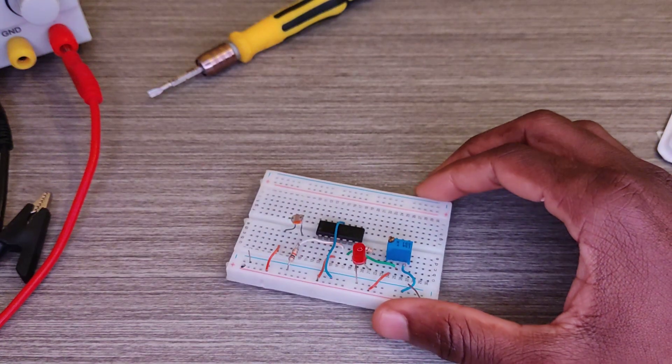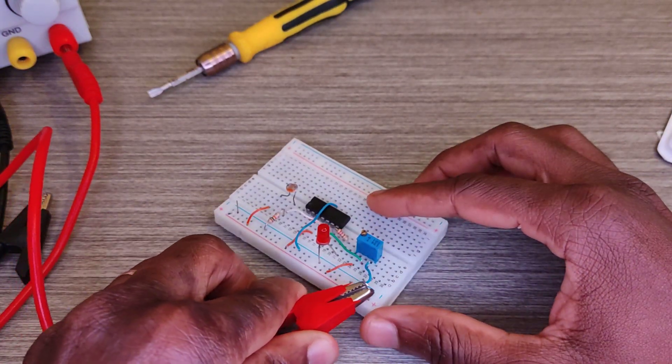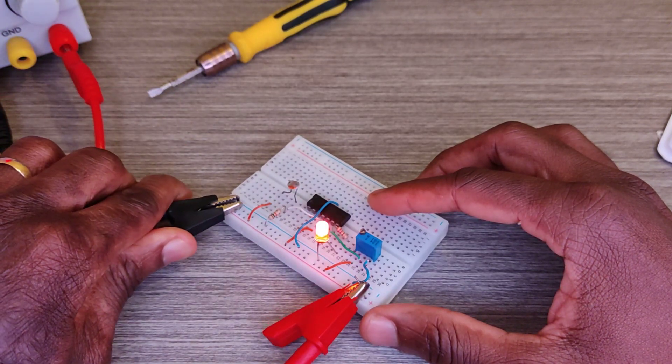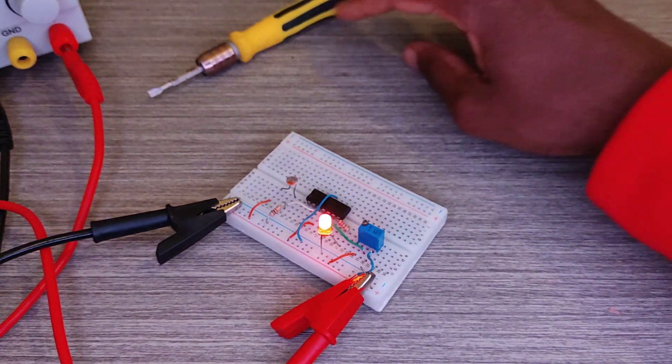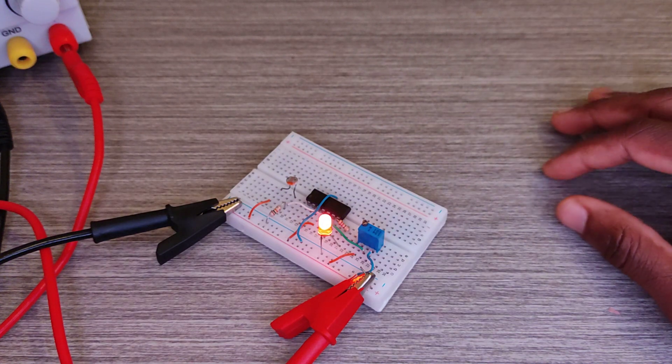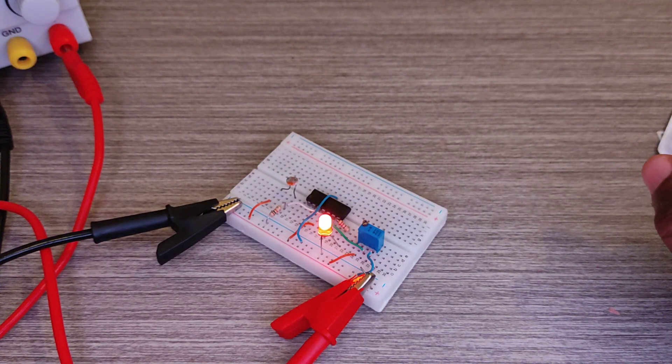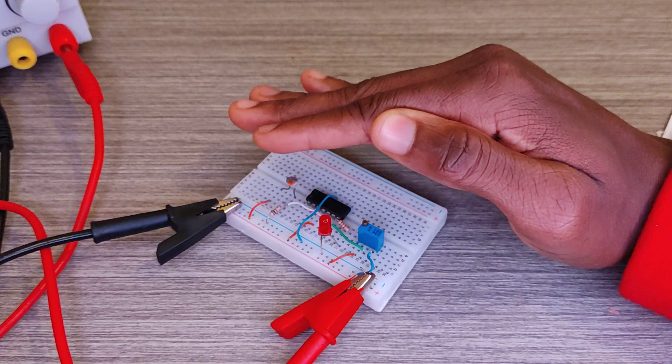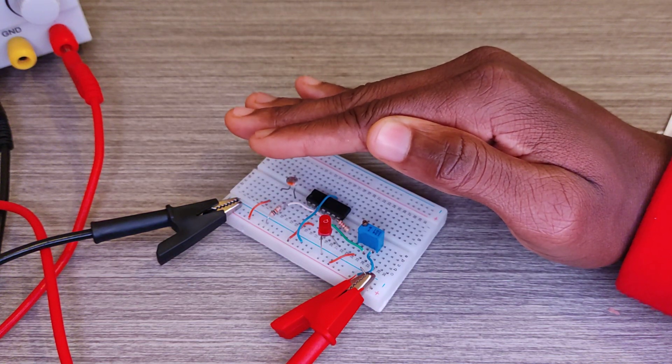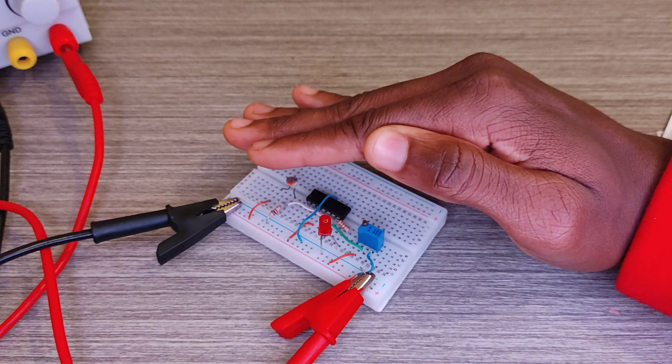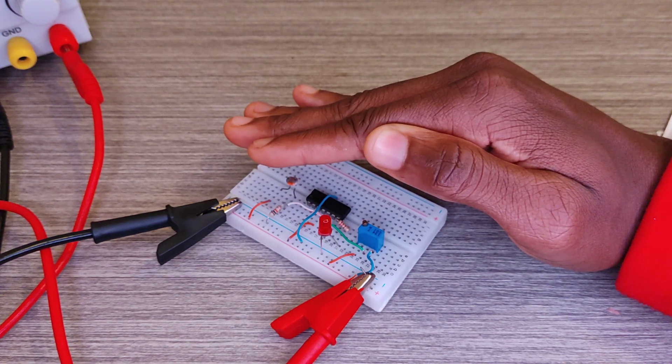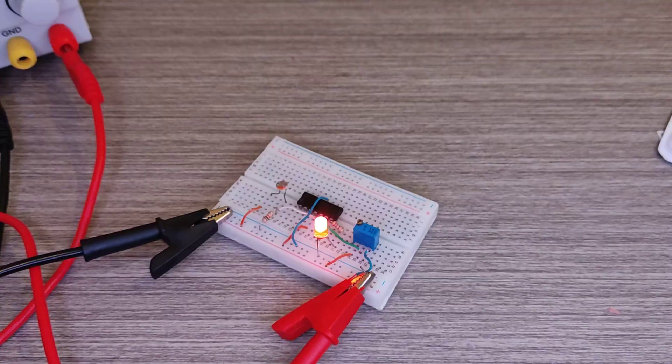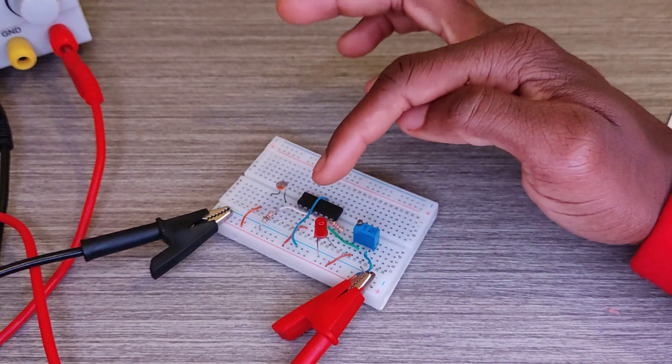I'm going to prove it. The power supply is five volts. Why is it a dark sensor? Because when the LDR stops receiving light from outside, the LED goes off.